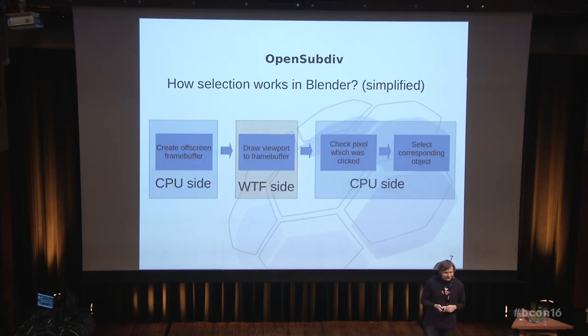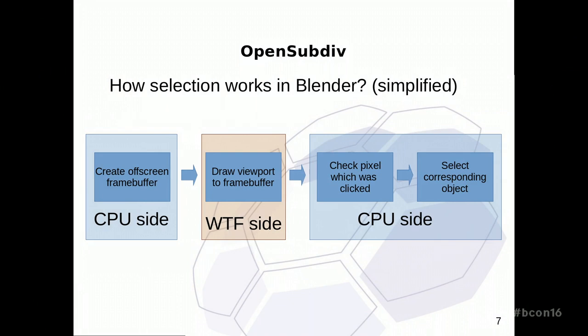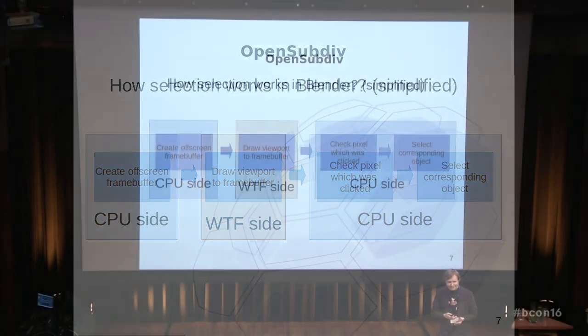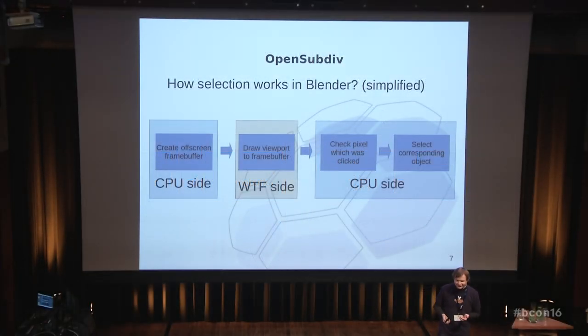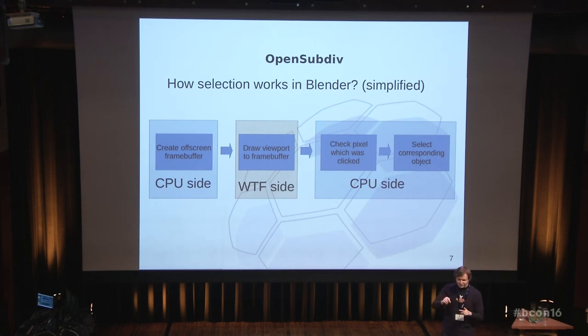So related to OpenSubdiv, let's get into how selection works in Blender. On the CPU side, you create so-called off-screen buffers — you tell OpenGL to draw not to the screen but to some memory buffer. Then you draw the viewport to this framebuffer. You don't really know which side it happens on because it depends on various things. Then Blender goes back to the CPU side to check which exact pixel was clicked and what object is under that pixel, and it selects that object.